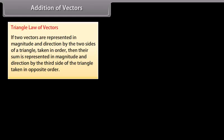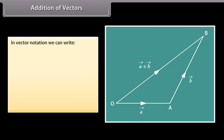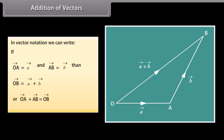Addition of vectors. Triangle law of vectors: if two vectors are represented in magnitude and direction by the two sides of a triangle taken in order, then their sum is represented in magnitude and direction by the third side of the triangle taken in opposite order. In triangle OAB, if vector A is represented by OA and vector B by AB, then their sum vector A plus vector B is represented by OB. In vector notation: if vector OA equals vector A and vector AB equals vector B, then vector OB equals vector A plus vector B, or vector OA plus vector AB equals vector OB.